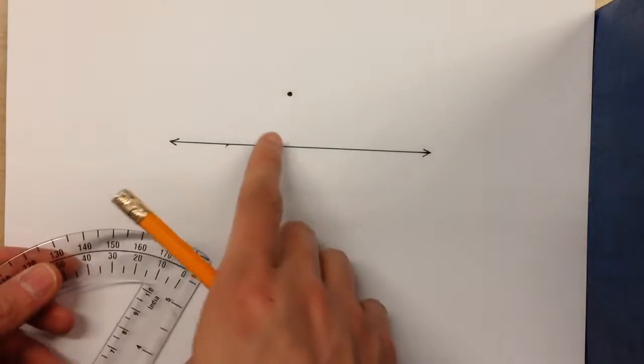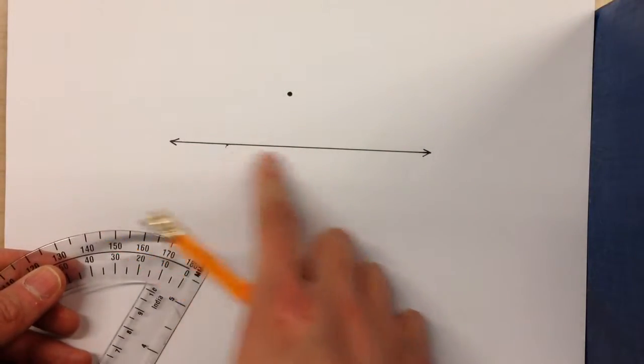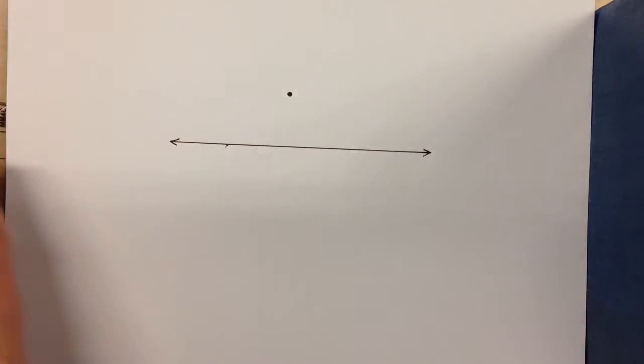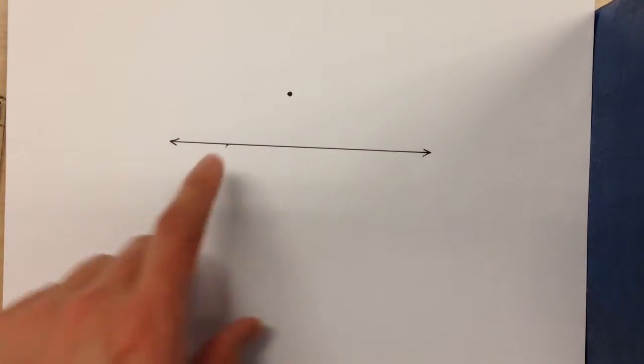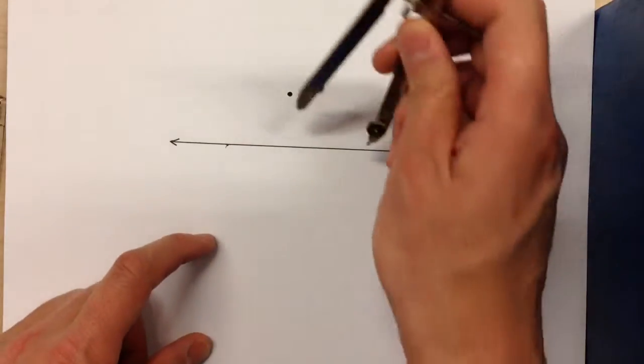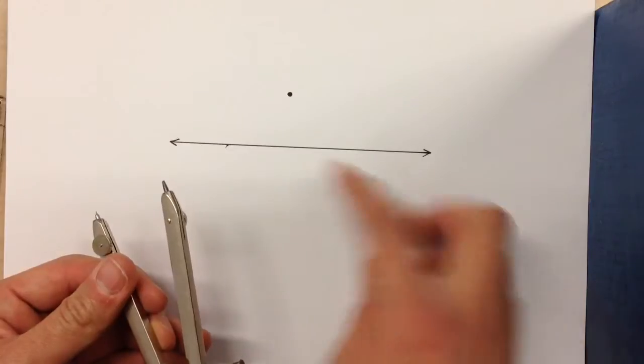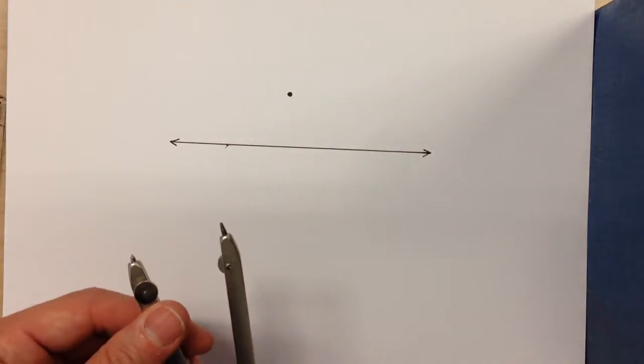Today I'm going to show you how to construct a perpendicular line through a given point. Now this is a little different than constructing a perpendicular bisector because the line goes on forever. We don't have any ends to draw from to figure out where it bisects.